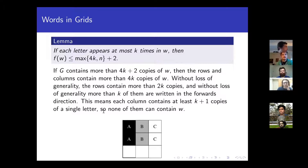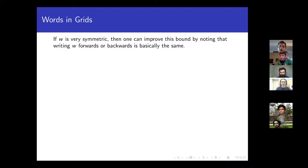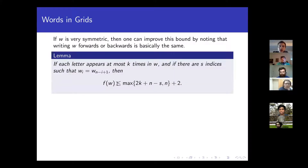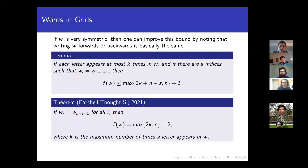You can improve on this proof if the word W is symmetric. If W is symmetric — written the same forwards or backwards, like FDF — then you don't have to do the step where you consider words written either forwards or backwards. You can gain basically a factor of two if the word is literally symmetric. More generally, if the word is close to symmetric, with S indices where the I-th letter looks the same as the (N-I+1)-th letter, then you get an upper bound in terms of S. The most interesting case is when W is literally symmetric: you get an upper bound where K is the maximum number of times some letter appears in W. This turns out to be sharp. So if you give me a symmetric word W, this is the exact answer for F(W), no matter what it is, no matter how many letters you use.